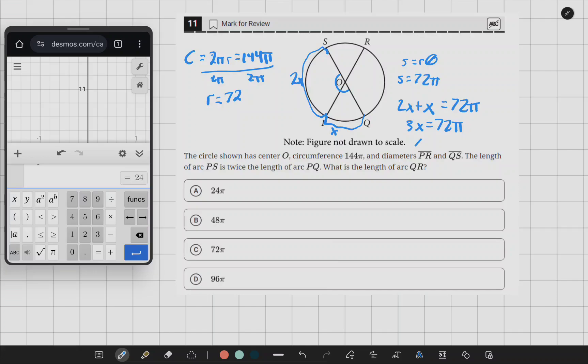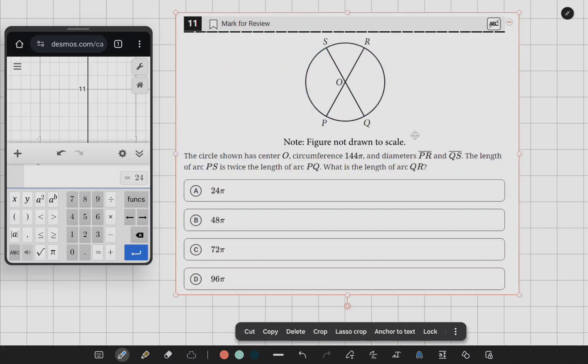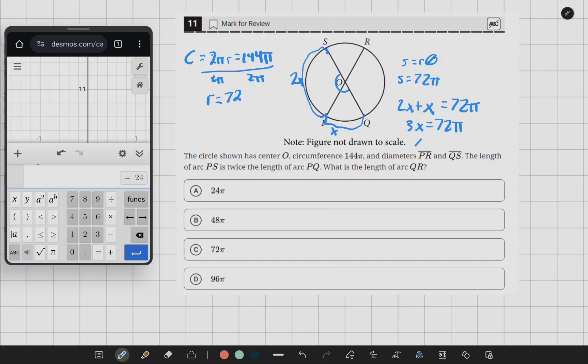So we know that x equals 24π, but that would be for PQ. But we are looking for QR,